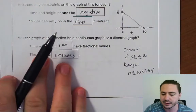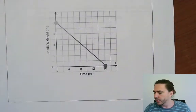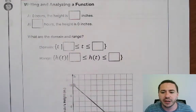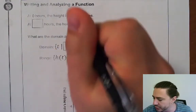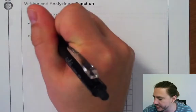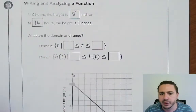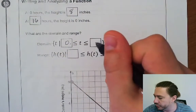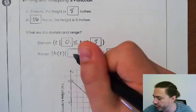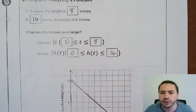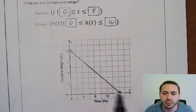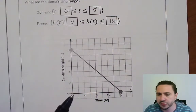To analyze further: at 0 hours the height is 8 inches, and at 16 hours the height is 0 inches. The domain goes from 0 to 16 and the range goes from 0 to 8. The graph is a continuous decreasing line in the first quadrant, and we do want to connect the dots.